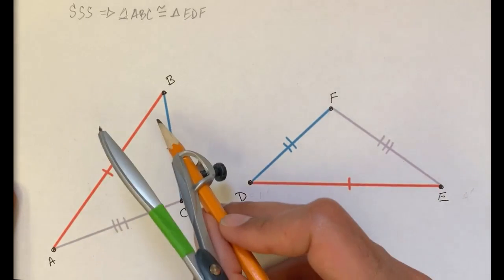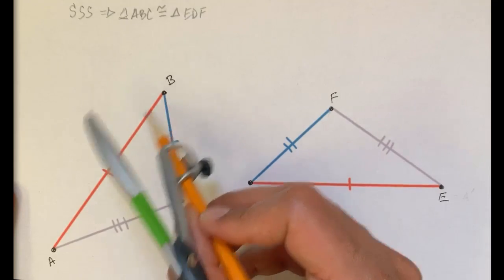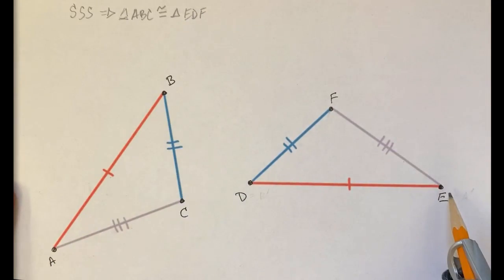So let's do a series of rigid transformations that maps AB onto ED, and you can imagine how to do that.